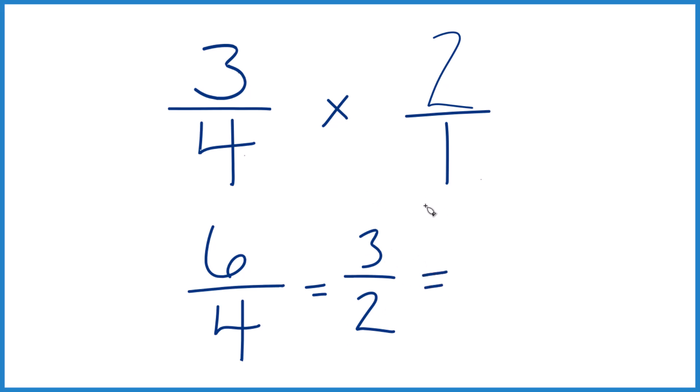If you want to write this as a mixed number, two goes into three one time with one left over, then we can bring the two across, one and a half.